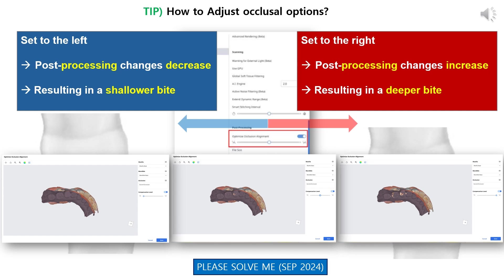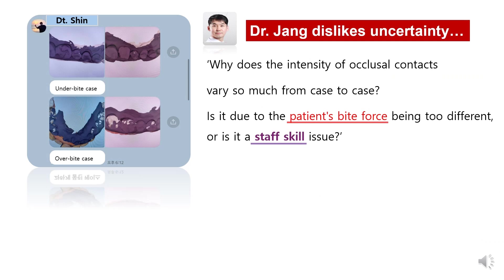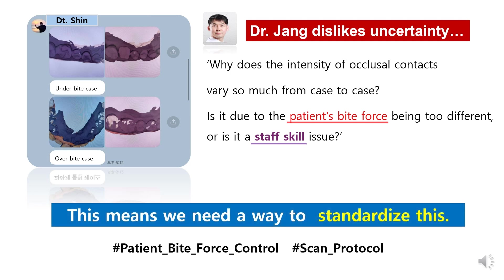Now we are looking at how this affects an actual patient case using each of these three settings. It means we can play with these settings to suit clinician preference or patient variants. This raises a question: how can we adjust the occlusal force for each patient since every patient has a different bite force? Our clinic found that we were getting uneven results across our patients. Dr. Jang, since he dislikes uncertainty, wanted a way to minimize such variation in results.